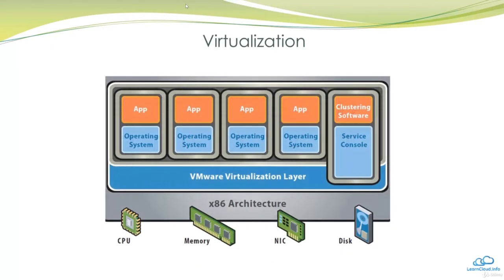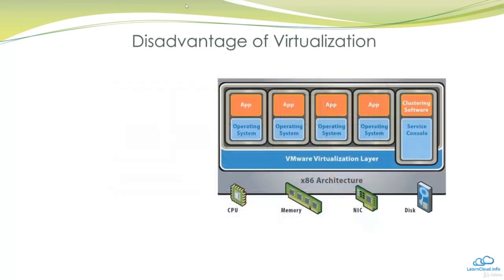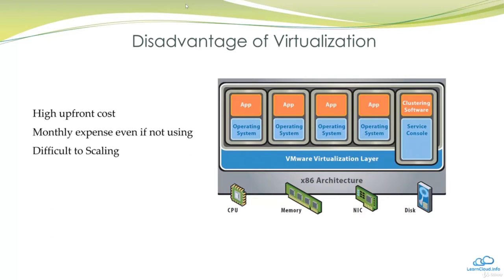We then started to implement virtualization, which allowed us to run multiple virtual machines on a virtual host, so we could get more usage out of our hardware and cut down on space, cooling, and cost. In context of the electricity example, it's like a small community of 10–15 houses sharing one power plant. Virtualization was better than having individual machines for each application, but there were still disadvantages: high upfront hardware costs, ongoing space and electricity costs for the data center, and utility costs for cooling.